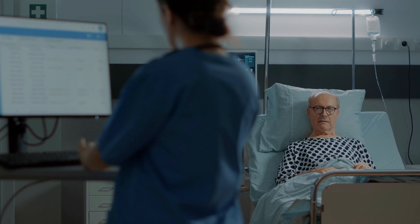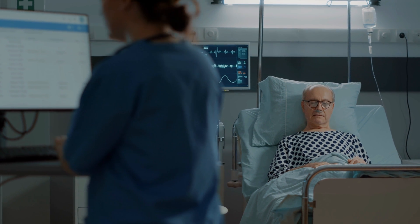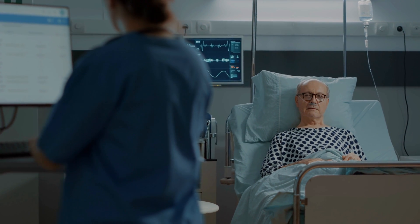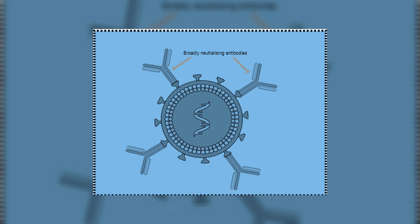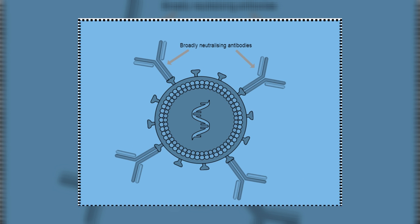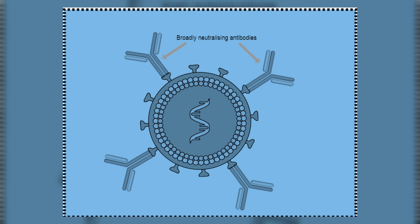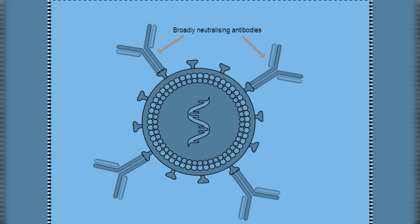These individuals are known as elite controllers and show no evidence of HIV disease progression despite not being on treatment. Some of these specialized antibodies act against the sites on the virus which are unlikely to mutate, and studies have shown that they can suppress viral rebound when antiretroviral treatment is interrupted.